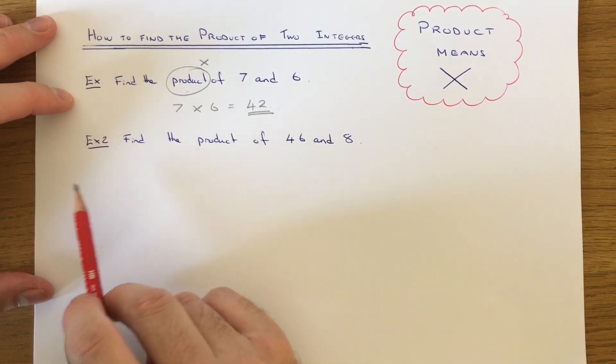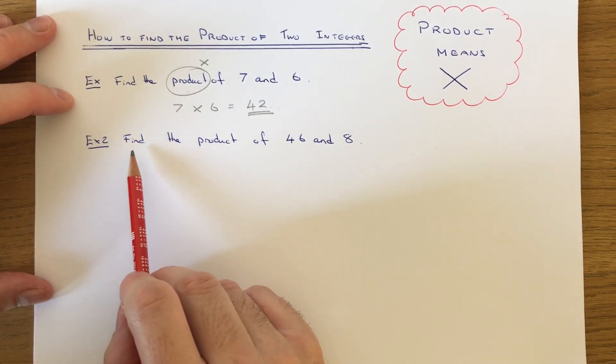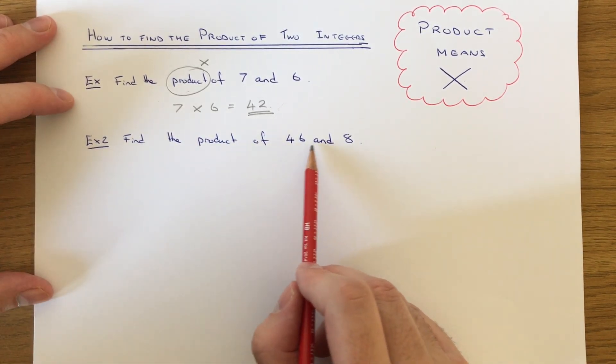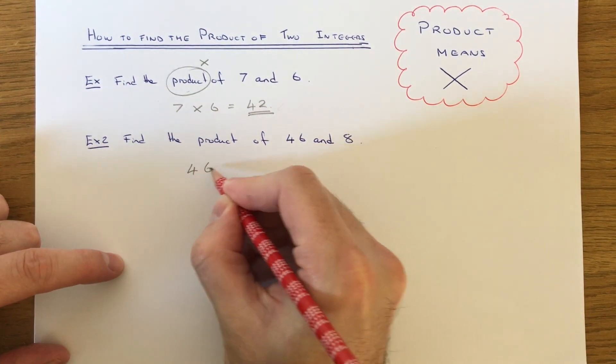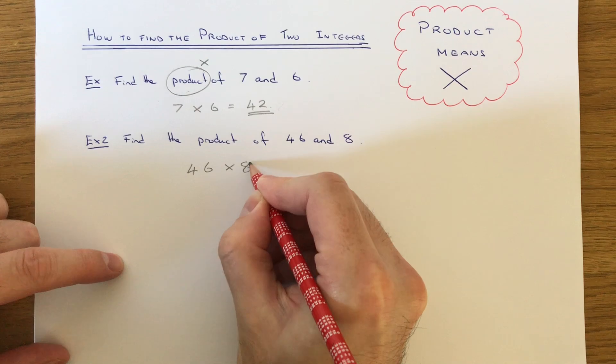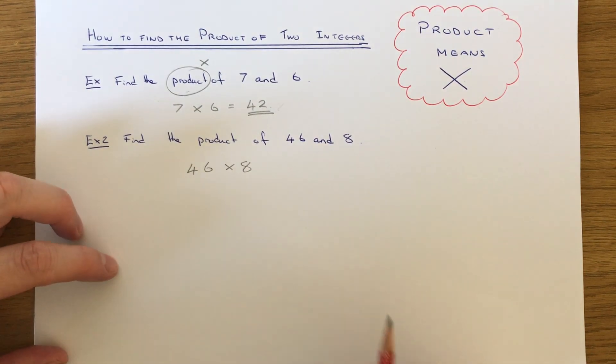So let's have a look at a second example. This one's a little bit harder to do. This time we've got to work out the product of 46 and eight. So again, we need to work out 46 times eight as product means multiply.